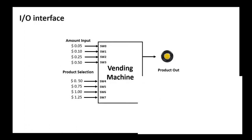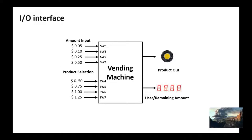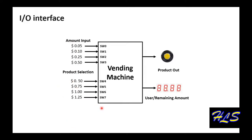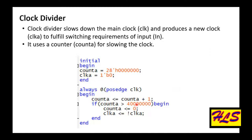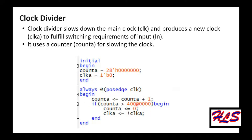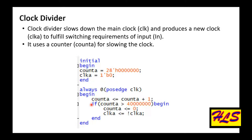The IO interface consists of the signals given by the user and the outputs displayed to the user. In the clock divider, we divide the clock into smaller parts to slow it down, introducing some delays in the program. We generate a clock signal that is slower than the given clock.